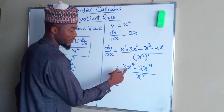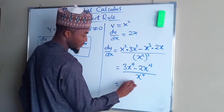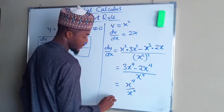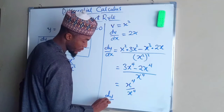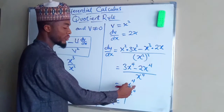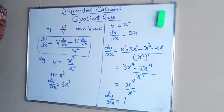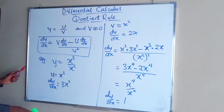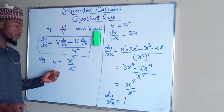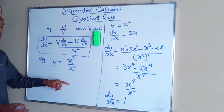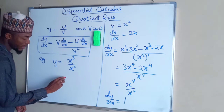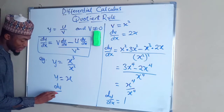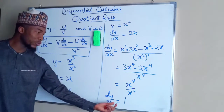This gives x to the fourth divided by x to the fourth, so dy/dx equals 1, since the numerator and denominator are the same. Another way to differentiate this is to simplify first. By laws of indices, x cubed divided by x squared equals x, and then dy/dx is simply 1 — the same answer.